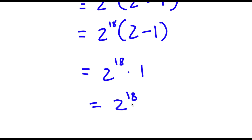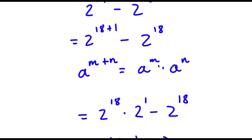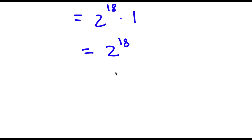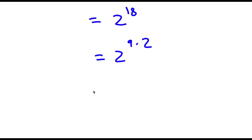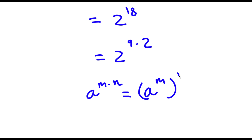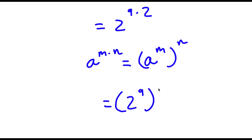So now what we're going to want to do is find the value for 2 to the power of 18. We found out that 2 to the power of 19 minus 2 to the power of 18 is 2 to the power of 18. So to find the value, I'm going to simplify. 2 to the power of 18 — well, 18 is the same thing as 9 times 2. And if I have a to the power of m times n, this is the same thing as a to the power of m to the power of n. So this is the same thing as 2 to the power of 9, to the power of 2.